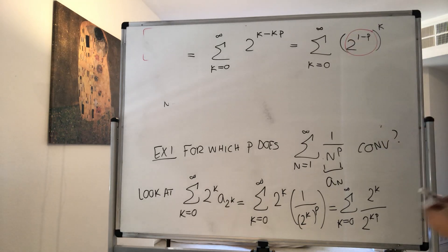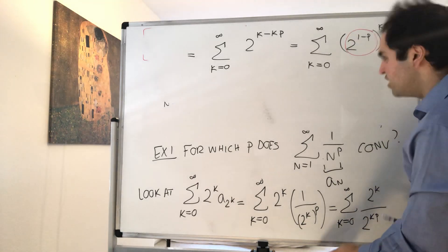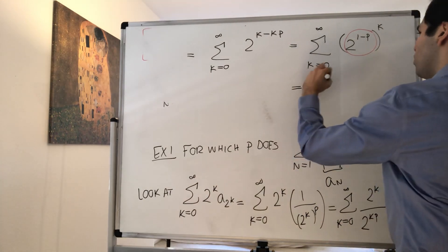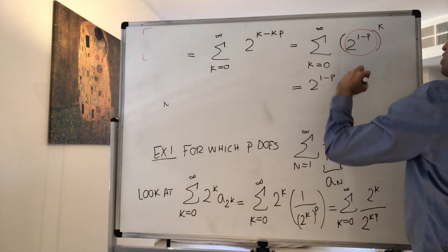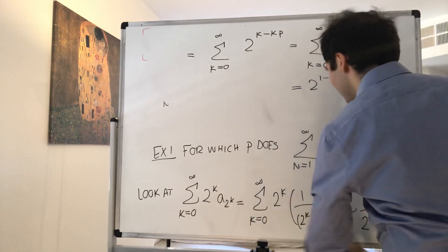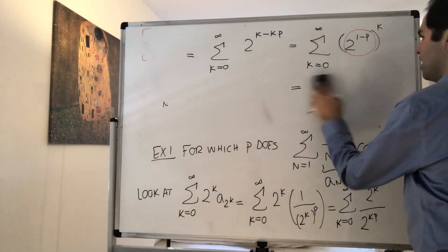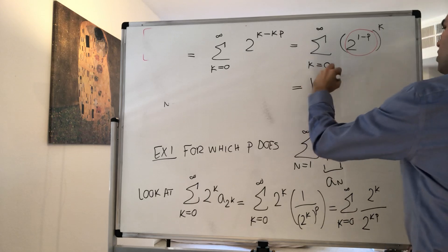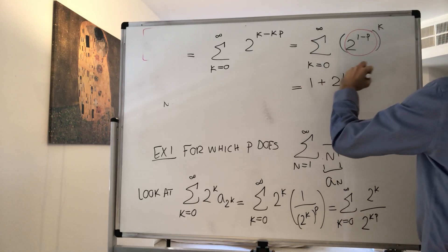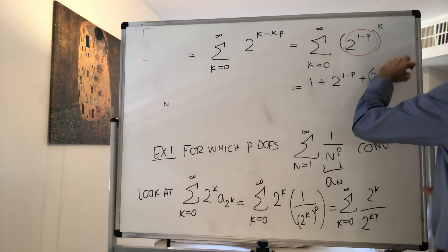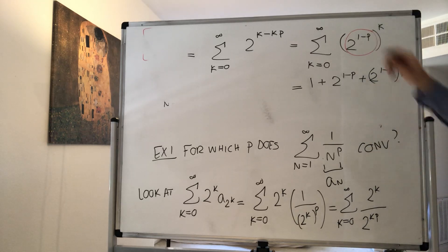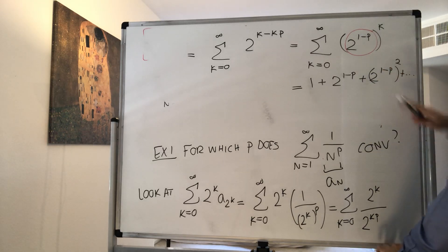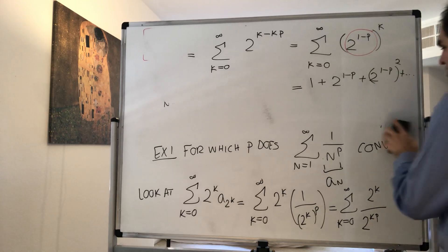So this is nothing else than the geometric series. That's just 2^(1-p) plus 2^(1-p) plus (2^(1-p))^2, and so on. And the question is, when does that converge? Well, when the middle thing is less than 1.